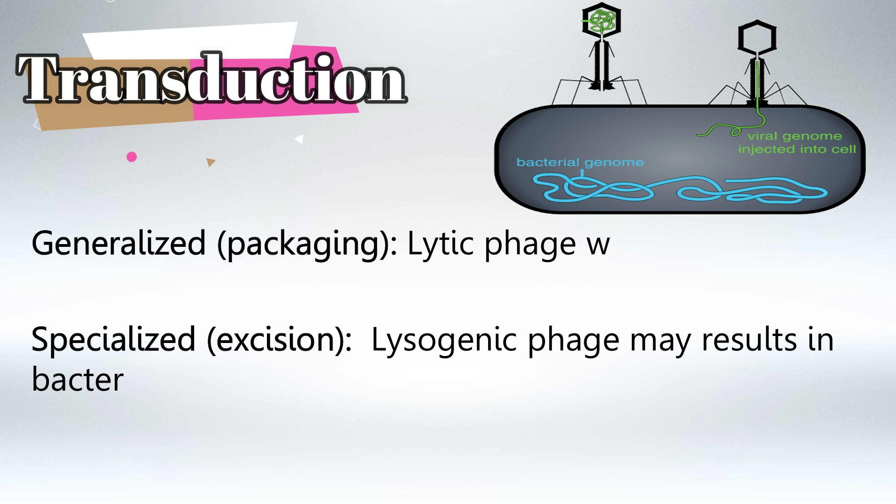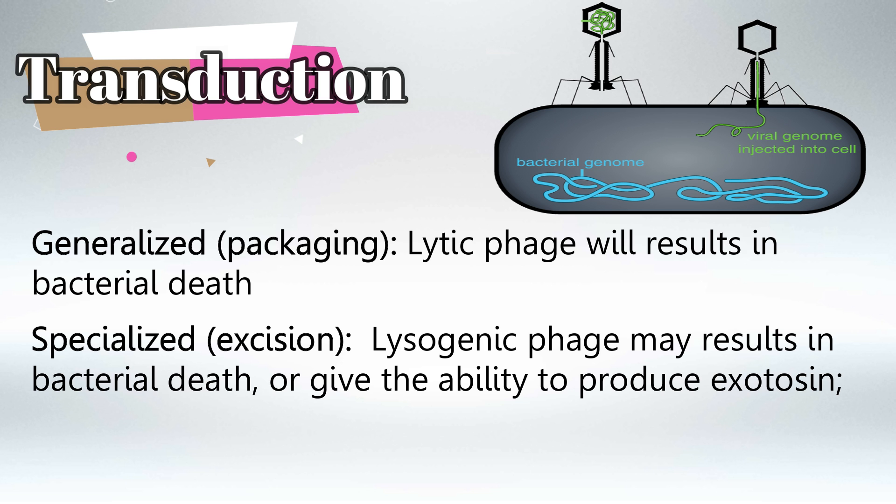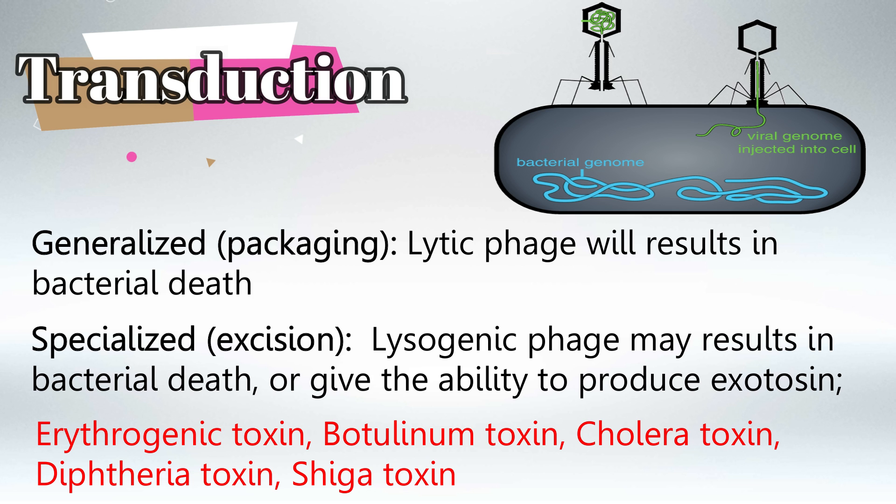If this results in a bacterial death we call this a lytic phage and if it didn't we call this a lysogenic phage. If the bacteriophage did not kill the bacteria, aka a lysogenic phage, it will give the bacteria some superpowers. So the bacteria now can produce exotoxins.